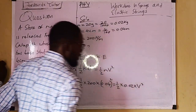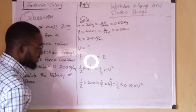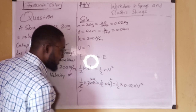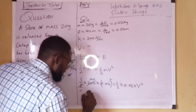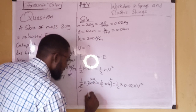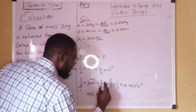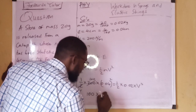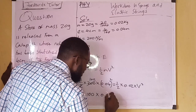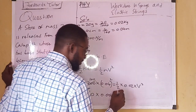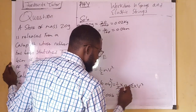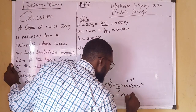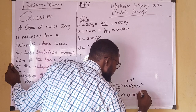Simplifying: the 2 divides into 200 to give 100. So we have 100 × (0.04)² = 0.01 × v². Now, (0.04)² = 0.0016, and ½ × 0.02 = 0.01. So we have 100 × 0.0016 = 0.01 × v².